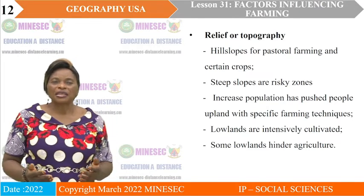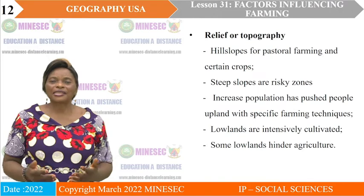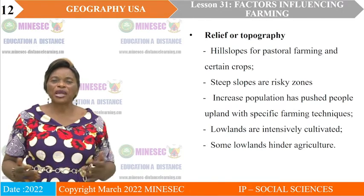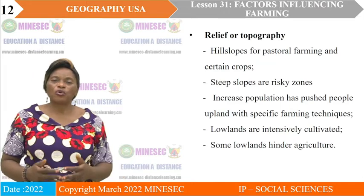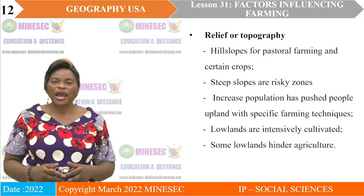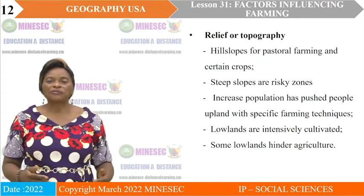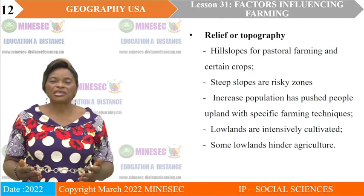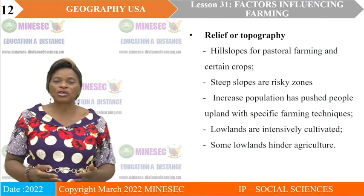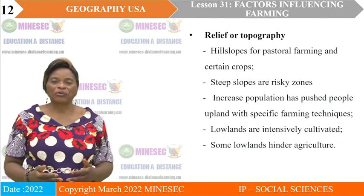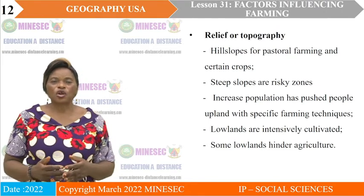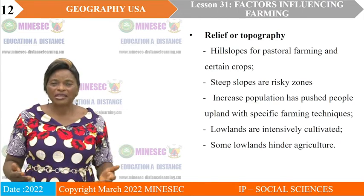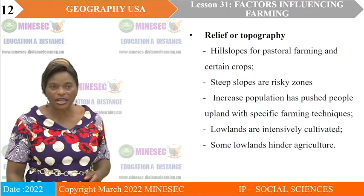We should also note that some lowlands can hinder agriculture. A swampy area, a desert area, or a thickly forested area with huge trees that need to be cut down — farming is always hindered in those areas despite the flatness of the relief.